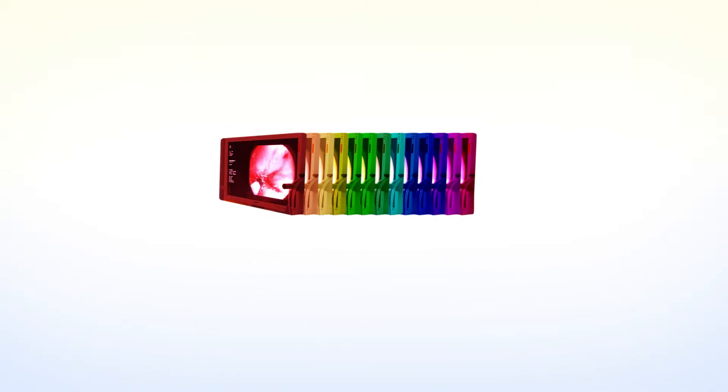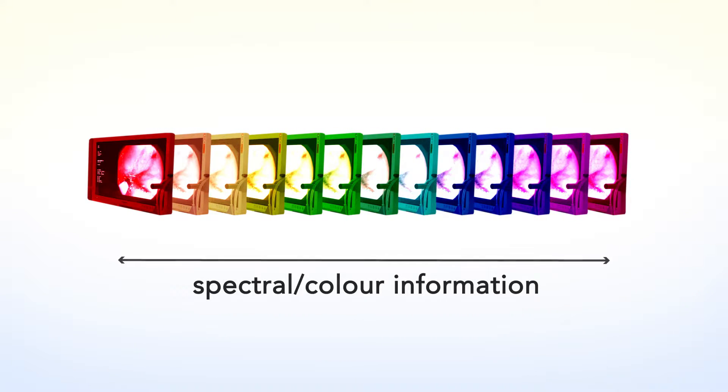With hyperspectral imaging you're able to extract this additional dimension to the data — the color information. From this color information you get additional information which allows you to perform more accurate diagnosis. You'll be able to not only see the cancer but also give suggestions of which treatment would work best.